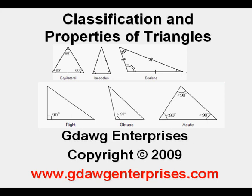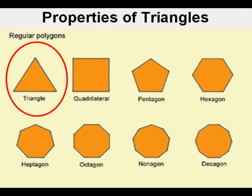The Classification and Properties of Triangles. Triangles are the simplest form of a polygon. While polygon means many-sided figure, the triangle is the polygon with the fewest number of sides, three.